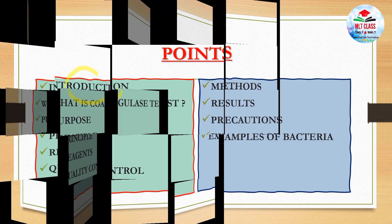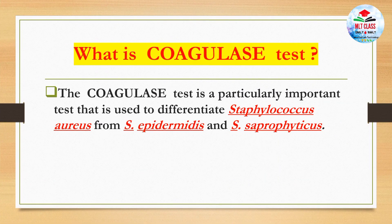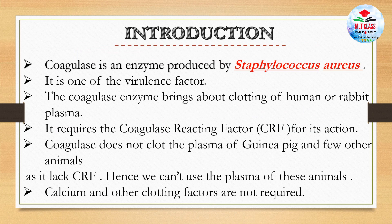First, we will see what is the coagulase test. The coagulase test is a particularly important test that is used to differentiate Staphylococcus aureus from Staphylococcus epidermidis and Staphylococcus saprophyticus. Coagulase is an enzyme produced by Staphylococcus aureus.